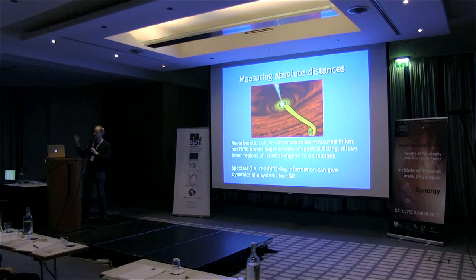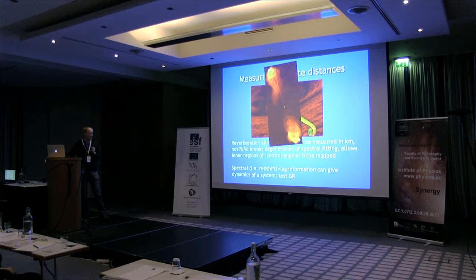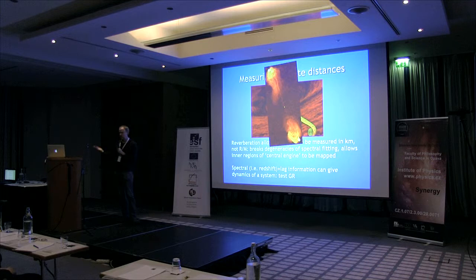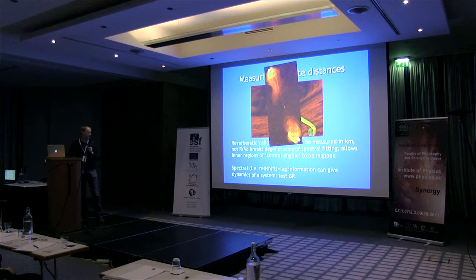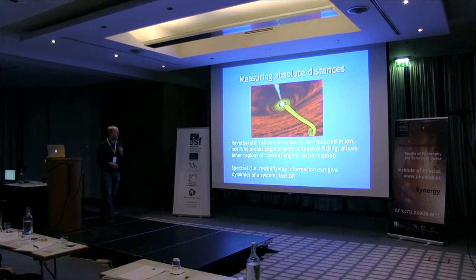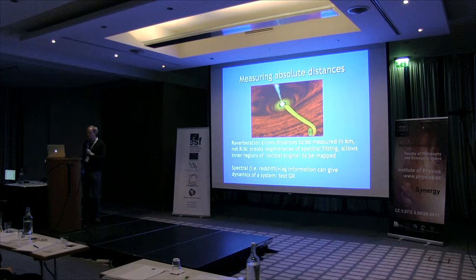If you want to explain to someone not interested in strong gravity or the inner workings close to black holes why that's important, you just show them that those innermost regions energetically must be producing the enormous energetic outflows in the form of winds and powerful jets that affect structure formation in AGN. It's really crucial both for astrophysics, but also for fundamental physics, because the combination of redshift information with the lags - the spectral information with the time lags - gives us essentially dynamics. That allows us to test our understanding of the behaviour of matter in strong gravity.